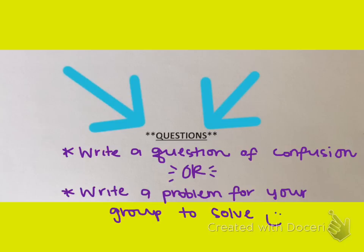However, if you feel like you totally get it, then you don't need to write a question of confusion. But instead of writing the question of confusion, you're going to need to write a problem for your group to solve. So we were working on multiplication and division. You would write either a multiplication problem or a division problem for your group to solve. So go ahead and write one of those two things underneath that question section and you are done for the evening.